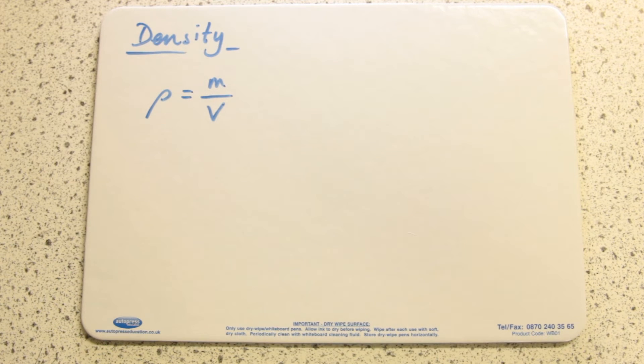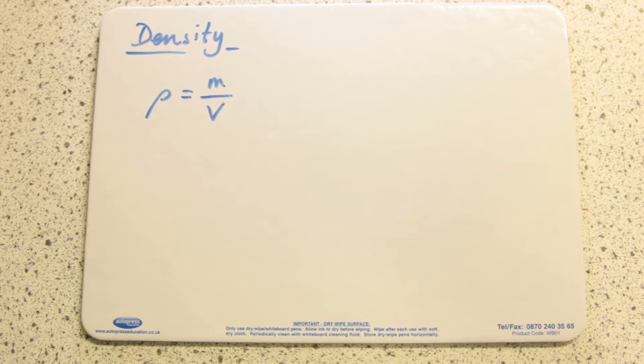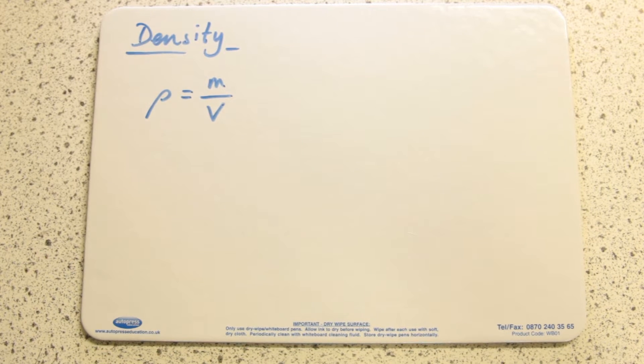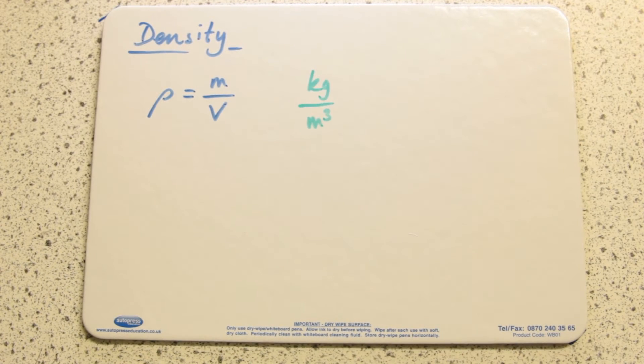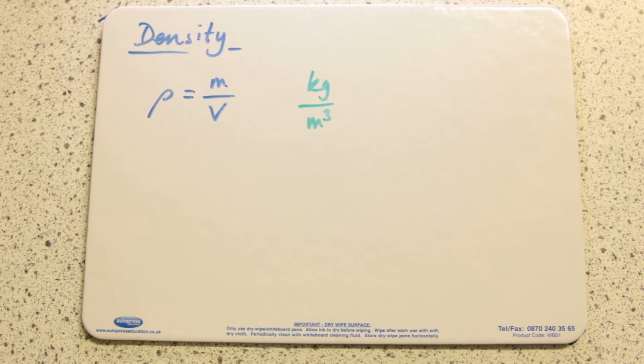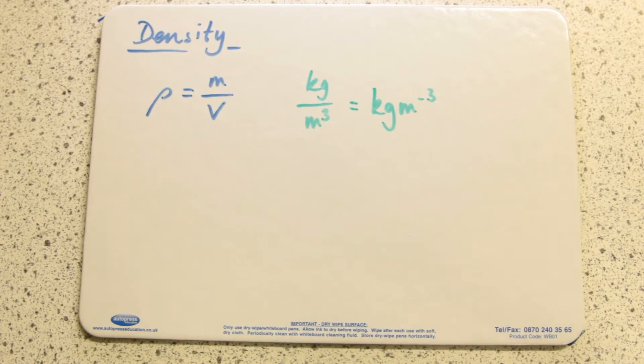It means how much mass is in how much space, or how many kilograms are in 1 meter cubed. So density has the units kilograms per meter cubed, or kg·m⁻³.